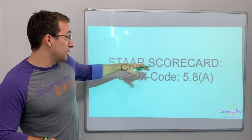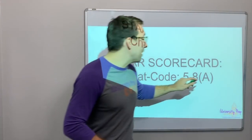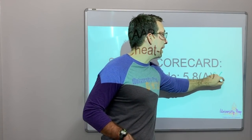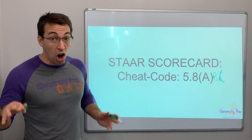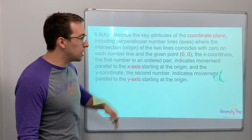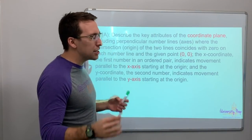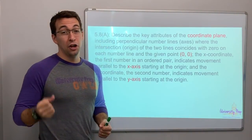Hey friends, STAAR scorecard cheat code 5.8. So 5.8A, B, and C all have to do with the same topic, just different degrees and different little vantage points, but it's all graphing.